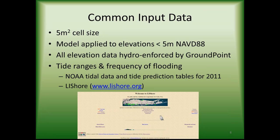Some common data inputs for both studies: both were covered with a five square meter cell size, so pretty high resolution for SLAM models. The model was applied to elevations below five meters in NAVD88. All elevation data was hydro-enforced by our GIS subcontractor to ensure hydro-connectivity was correct underneath bridges. We used similar tide range data and frequency of flooding data from NOAA tide data for both studies, and for New York we had some data from the Long Island Shore website.